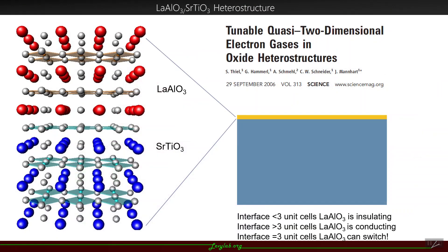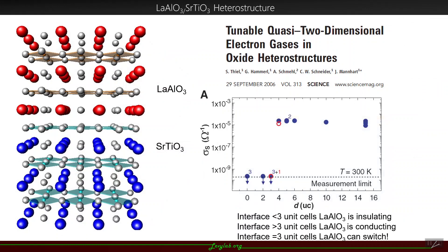Let's talk about the material structure we use, the LAO-STO heterostructure. The interface between these two insulating complex oxides is rich with interesting physics. Most important to note is the thickness-dependent metal-insulator transition that occurs. When we have fewer than three unit cells of LAO on top of STO, the interface is insulating, but when we have greater than three unit cells, the interface becomes conducting and a 2D electron system forms.